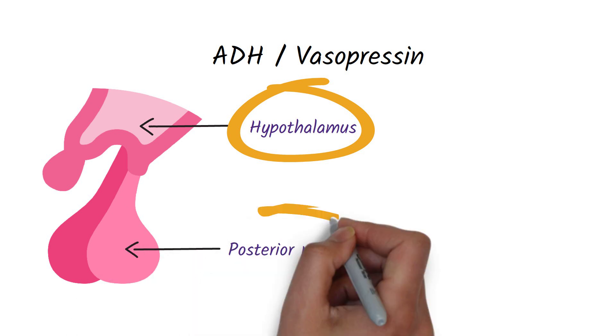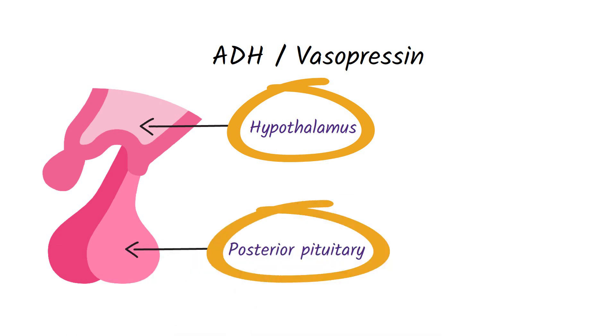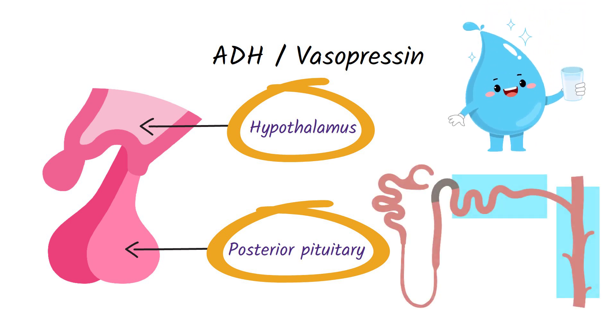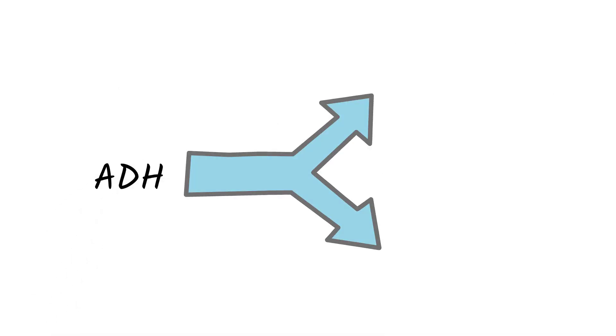ADH is a hormone that regulates the water balance in our body by causing reabsorption of water in the distal convoluted tubule and collecting duct cells in the kidney. Abnormally high levels of ADH can lead to SIADH.